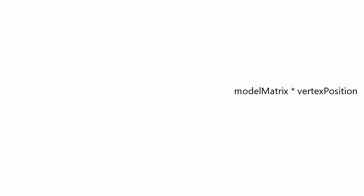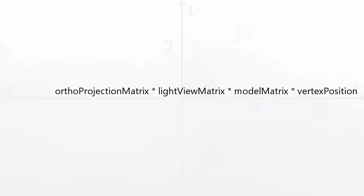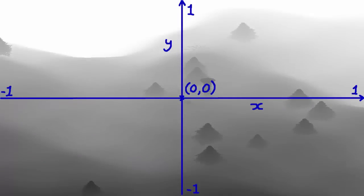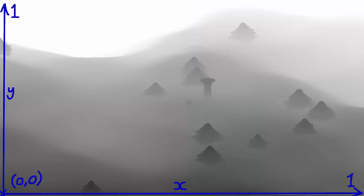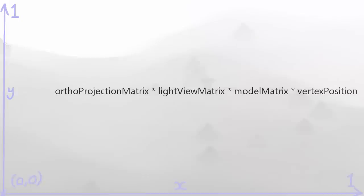That's exactly what we're going to do to convert a terrain vertex into shadow map space — multiply it with the terrain's model matrix, the light's view matrix, and that orthographic projection matrix used to render the shadow map. However, that gives us the position in clip-space coordinates, and since we want to use the coordinates to sample a texture, we need to convert to texture coordinate space, so we're also going to do a simple conversion between the two systems.